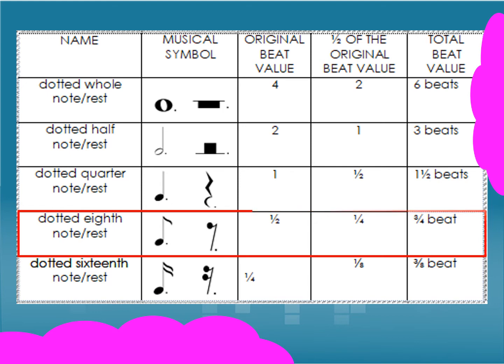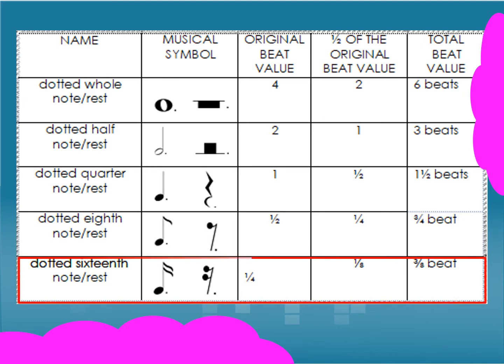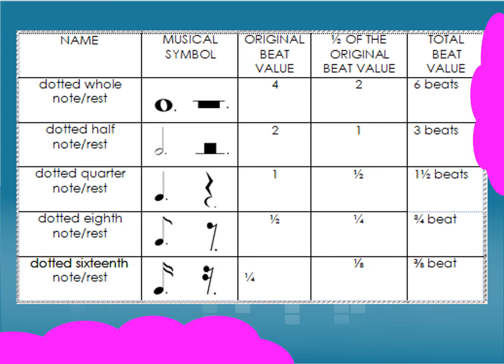The last one is the dotted 16th note or rest. A dotted 16th note or rest has an original value of one-fourth, and one half of the original beat value is one-eighth. Therefore, the total beat value of a dotted 16th note or rest is equivalent to three-eighths beat.